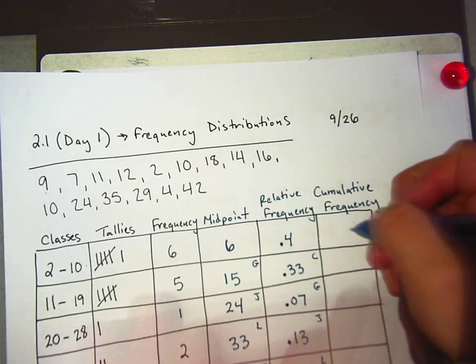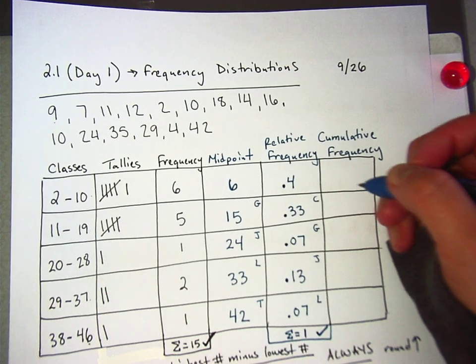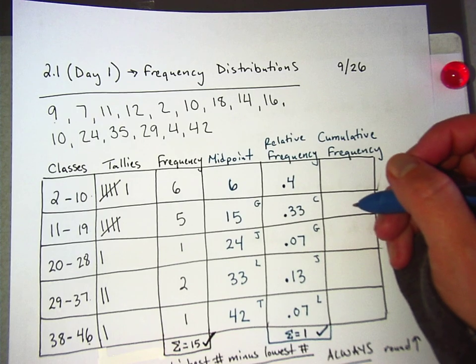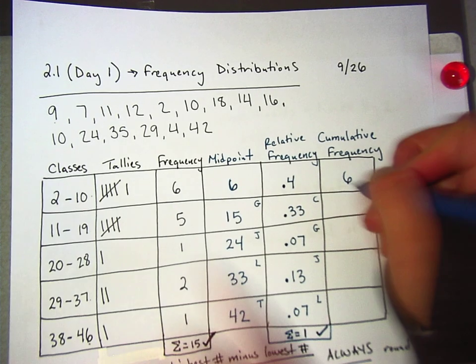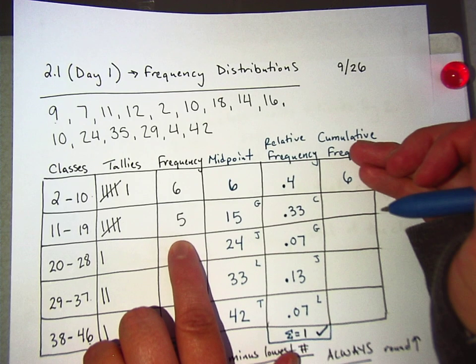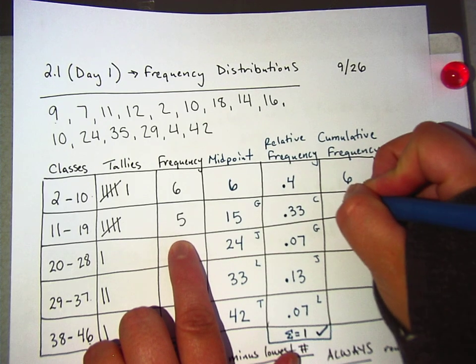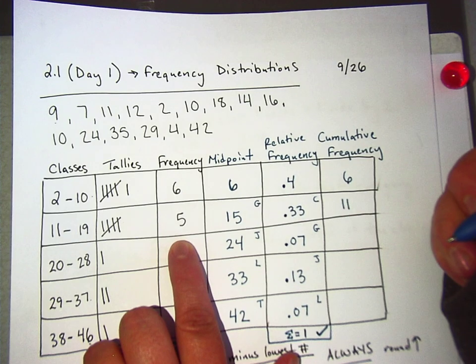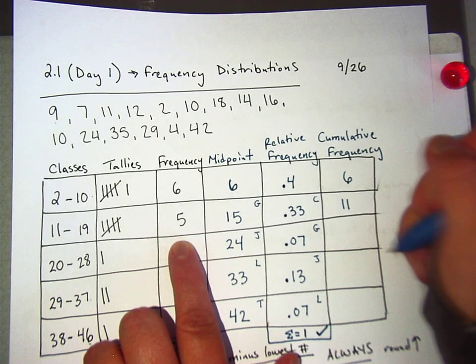How many are in this first category, this first class? How many tallies? What's the frequency? Six. Six. And then the next one is not just five. It's five plus the previous six, which is how many so far? 11. Do you see what I mean by a running total? What's the next one going to be?